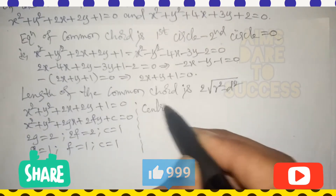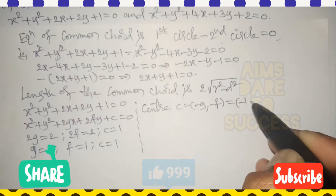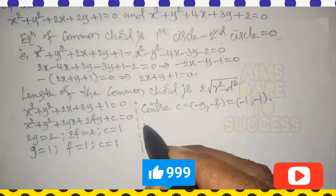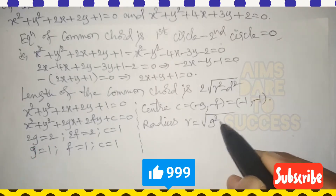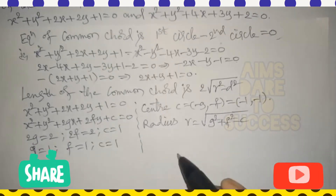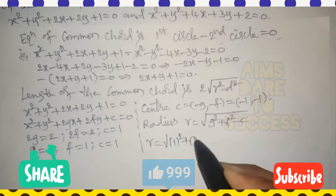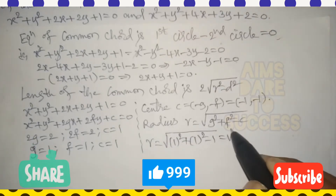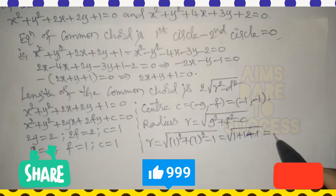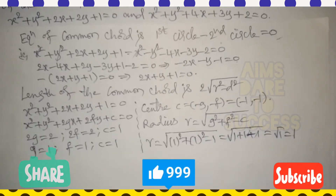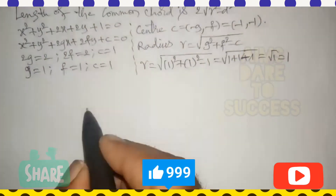The center C = (−g, −f) = (−1, −1). The radius r = √(g² + f² − c) = √(1² + 1² − 1) = √(1 + 1 − 1) = √1 = 1. So radius r = 1.